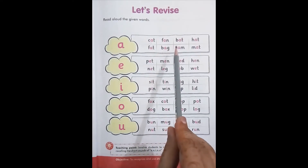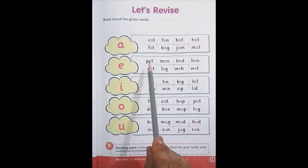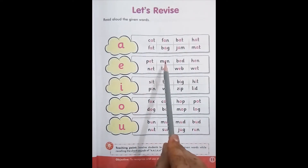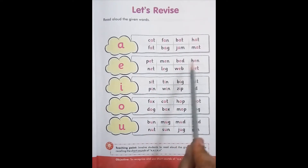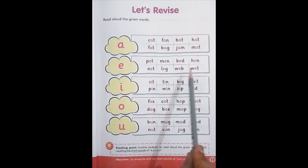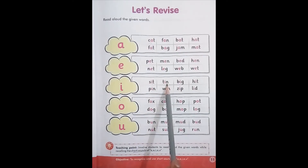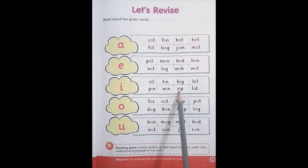Now read aloud these words: bag, jab, mat, pet, men, bed, hen, net, leg, web, wet, sit, tin, big, hit, pin, wind, zip, lip, fox.